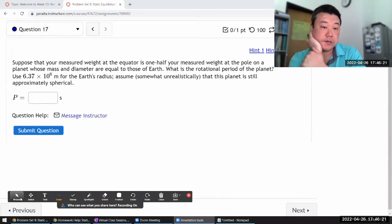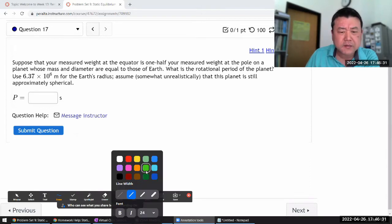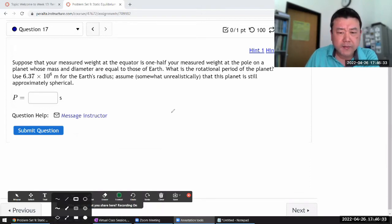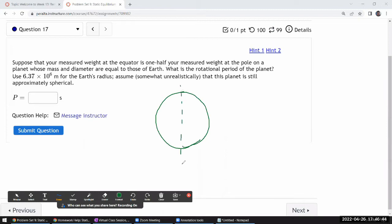So this is what the question is saying. It says suppose that your measured weight at the equator... Let me just start drawing a diagram since it's talking about equator and whatnot. So I'm imagining a planet of some mass that's spinning like many planets do, and so there's an equator which will be one set of interesting points.